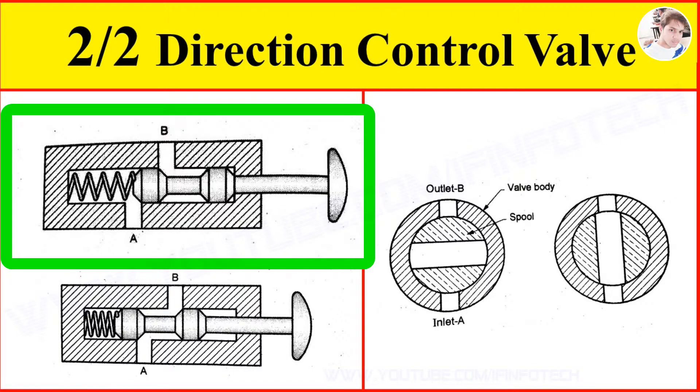The figure shows a sliding spool spring return type normally closed 2x2 Direction Control Valve. In normal position of spool, the ports are closed up. Oil cannot flow from port A to port B.